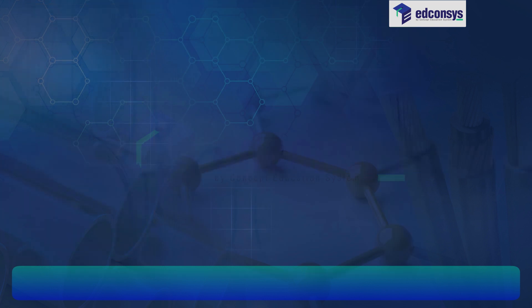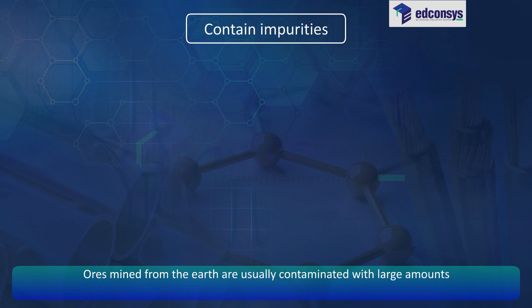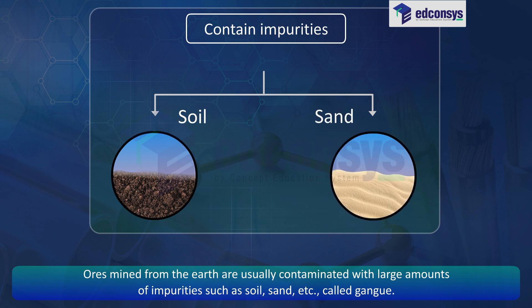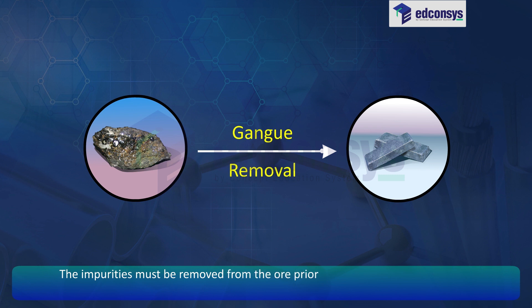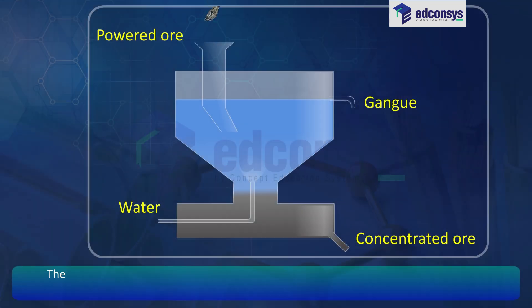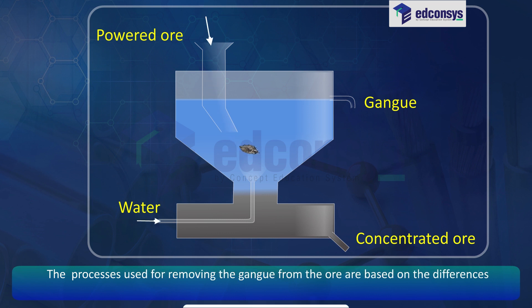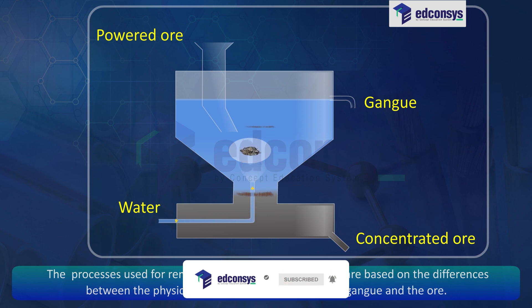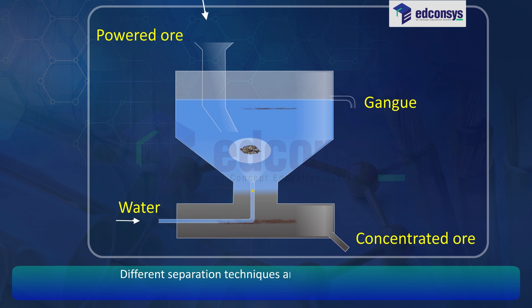Enrichment of Ores. Ores mined from the earth are usually contaminated with large amounts of impurities such as soil, sand, etc., called gangue. The impurities must be removed from the ore prior to the extraction of the metal. The processes used for removing the gangue from the ore are based on the differences between the physical or chemical properties of the gangue and the ore. Different separation techniques are accordingly employed.